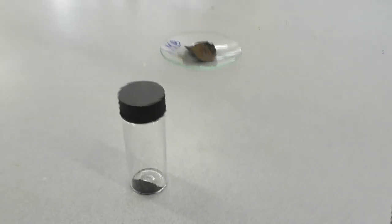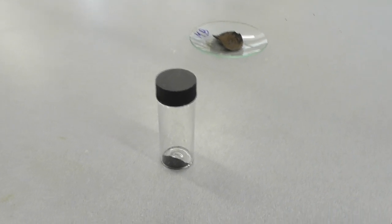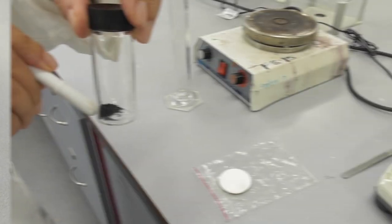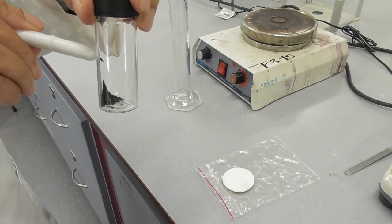The dried product gets transferred into a vial. Then I hold a magnet to the outside of the vial to check whether my product is magnetic or not.